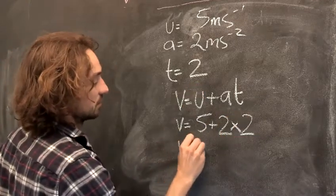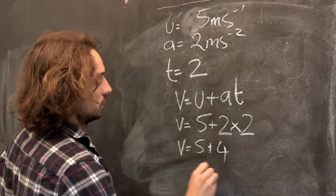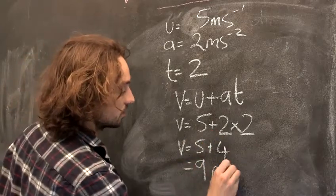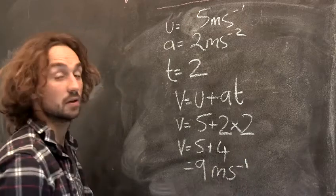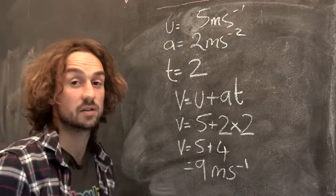So, my velocity is five plus four, which is nine. And we always write the units meters per second. And that's how to find velocity.